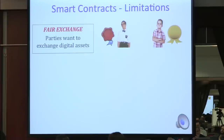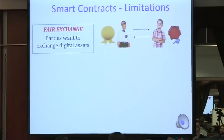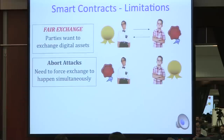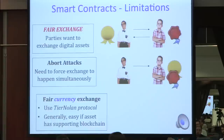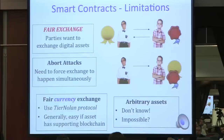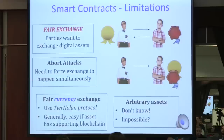Although Bitcoin and Ethereum do support some version of smart contracts, there are fundamental limitations. Consider the basic contract that allows fair exchange—two parties want to exchange their digital assets. The main problem is when one party cheats and doesn't send their asset, thus getting both assets. If the assets are cryptocurrencies, it's possible to implement fair exchange via the tier-null protocol from the Bitcoin forums. But when the assets are arbitrary digital items without supporting blockchains, we have no idea how to implement fair exchange smart contracts. Fair exchange is as simple as contracts can get.